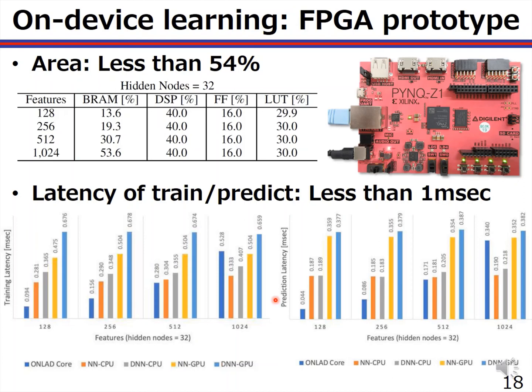This is the evaluation result in terms of area and latency on the FPGA board. The operating frequency of the programmable logic part is 100 MHz, and Vivado HLS was used for the design and implementation. The resource utilization is less than 54%, and the latency for sequential training and prediction is both less than 1 ms. This result is much faster than the software implementations. Again, this is just an FPGA-based prototype; our goal is to implement a running AI chip integrated with the sensors.